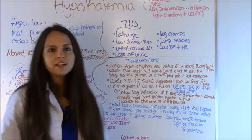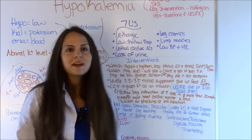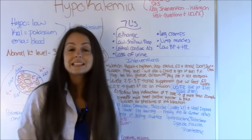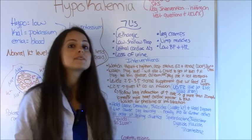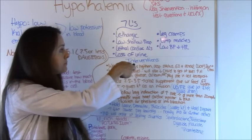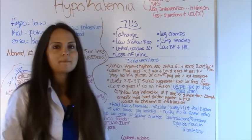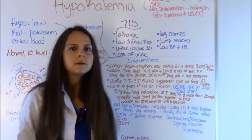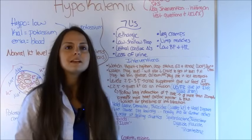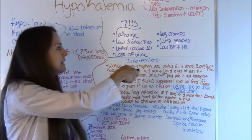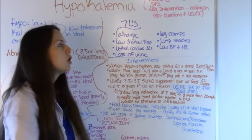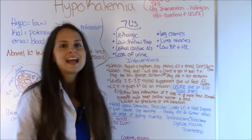Fourth, loss of urine — remember they're going to be peeing a lot, and those diuretics like Lasix can cause that because they're wasting potassium. Fifth, leg cramps — that is because the muscles are cramping because the potassium levels are too low, since potassium plays a role in muscles. Sixth, limp muscles — that's the flaccid part. And last, low blood pressure and heart rate.